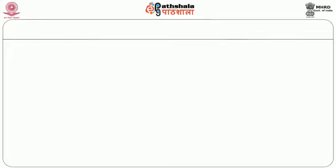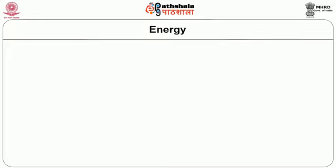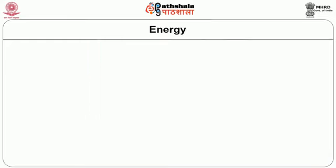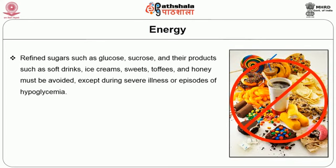The first proximate principle is energy intake. Energy intake is recommended based on nutritional screening results of the patient and should be tailor-made whether the patient is obese or overweight. A calorie reduction is advised, and if the person is at normal weight, ideal weight management is advised. Carbohydrate-rich foods like refined sugars and their products such as soft drinks, ice creams, sweets, and honey must be avoided except during severe illness or episodes of hypoglycemia.